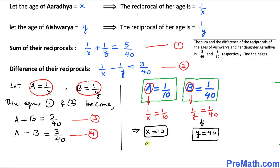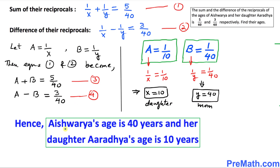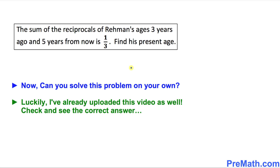Since X is the daughter Aradhyaya's age and Y is the mother Ashria's age, the daughter's age is 10 years and the mother's age is 40 years. That is our answer. Here is your assignment — can you do a similar one on your own? I've already uploaded that video as well, so please check it out. Thanks for watching, and please don't forget to subscribe to my channel for more exciting videos.